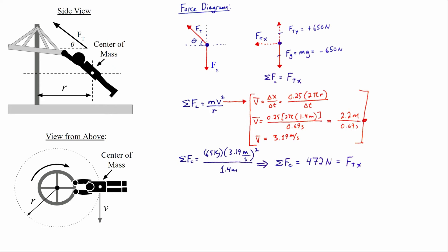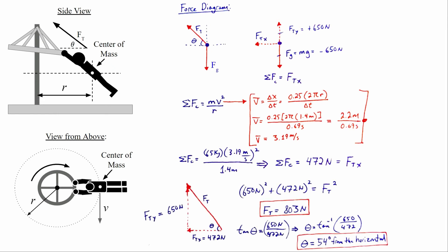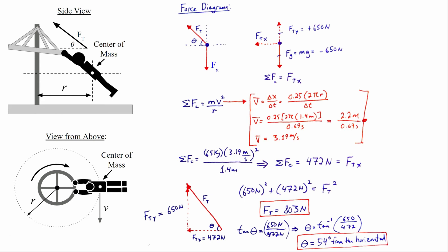Now we use the known y component (650 N) and x component (472 N) to find the actual tension force and angle. The tension force is the hypotenuse of a right triangle, so using the Pythagorean theorem: 650² + 472² = T², giving a tension of about 803 newtons. For the angle, we use tangent: tan(θ) = 650 / 472, so θ = arctan(650/472) ≈ 54 degrees from the horizontal.